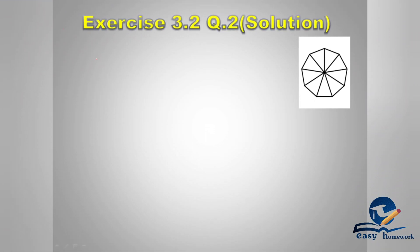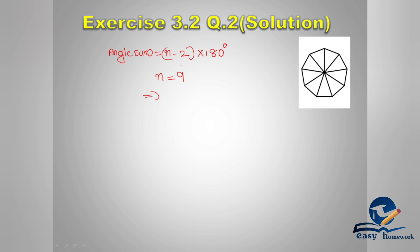Now let's go to the solution for Exercise 3.2, Question 2. First, find the measure of each exterior angle of a regular polygon with 9 sides. For an n-sided polygon, using the angle sum property: angle sum equals (n-2) × 180 degrees. Here, n equals 9, so we substitute: (9-2) × 180.